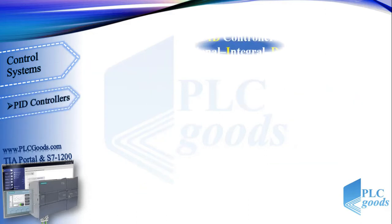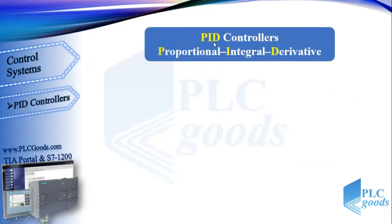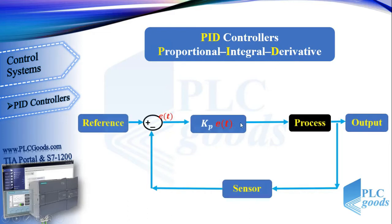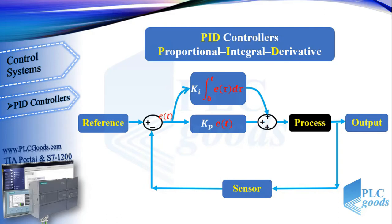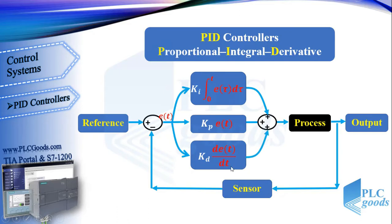Let's see what PI and PID controllers are. PID is an abbreviation of Proportional-Integral-Derivative. We've already explained the proportional controller. If the error integral term is added to this controller, then we'll have a PI controller, and if we also use the error derivative term, we'll have a PID controller.